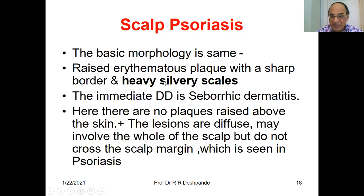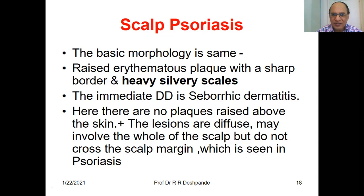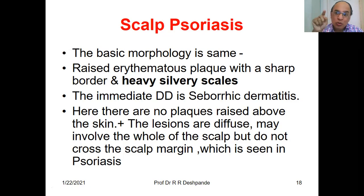The basic morphology is the same — raised erythematous plaques with a sharp border and heavy silvery scales. The immediate differential diagnosis will be seborrheic dermatitis. In seborrheic dermatitis, there are no raised plaques above the skin; the lesions are diffuse and may involve the whole scalp but do not cross the scalp margin. In psoriasis, the scalp margin is crossed — not in seborrheic dermatitis.